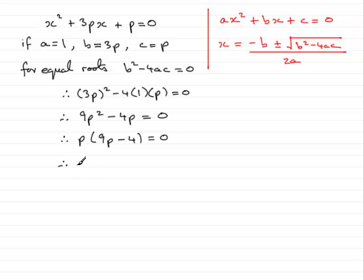And then, this would lead to either one of these factors equaling 0. So, therefore, either p equals 0, or 9p minus 4 equals 0.